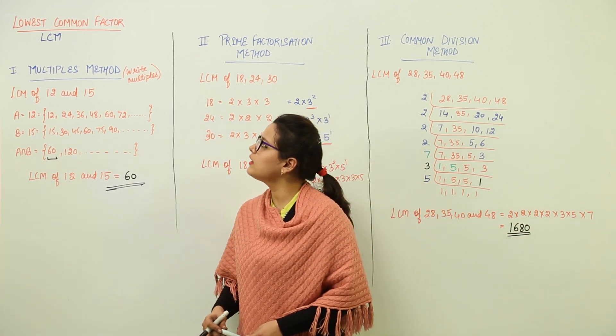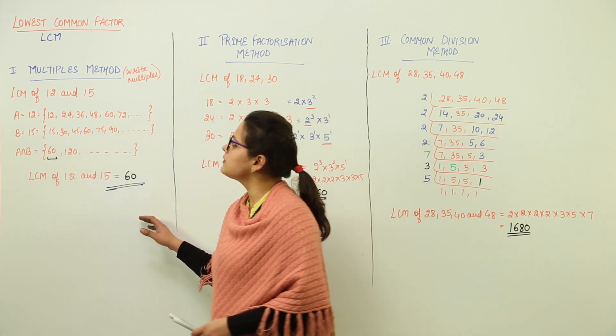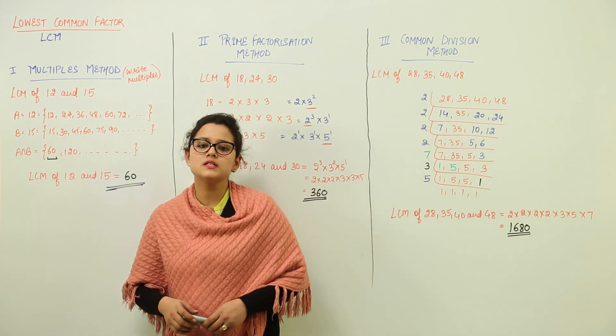Now, we will learn how to find out the lowest common factor or LCM. For LCM calculation, we have three methods.